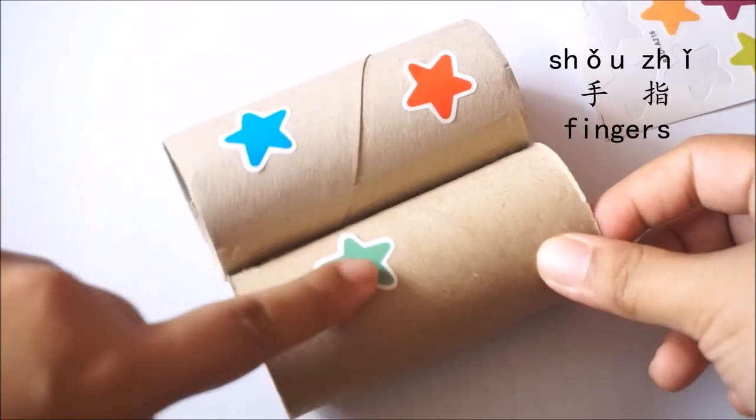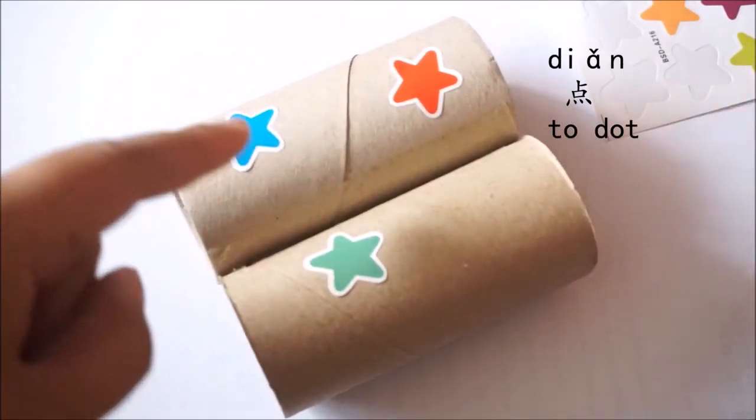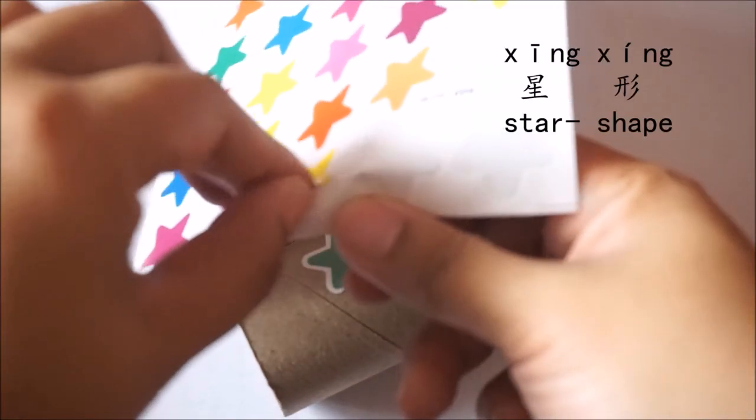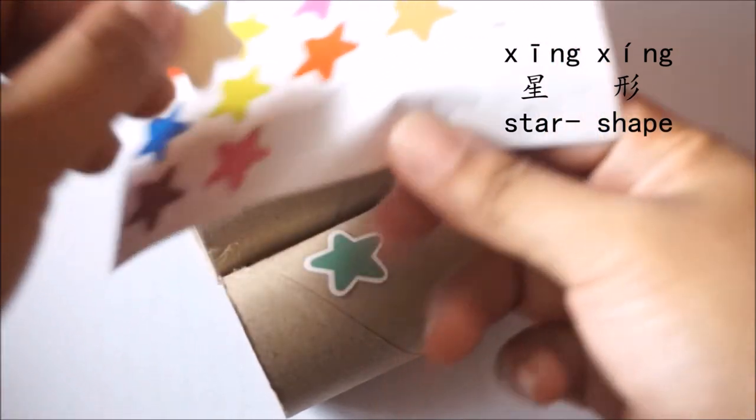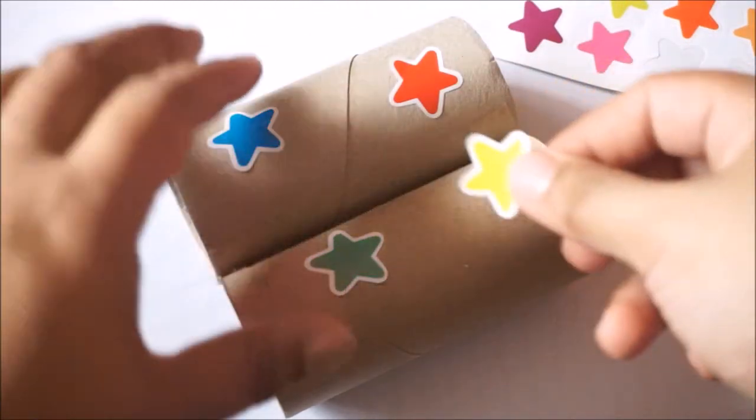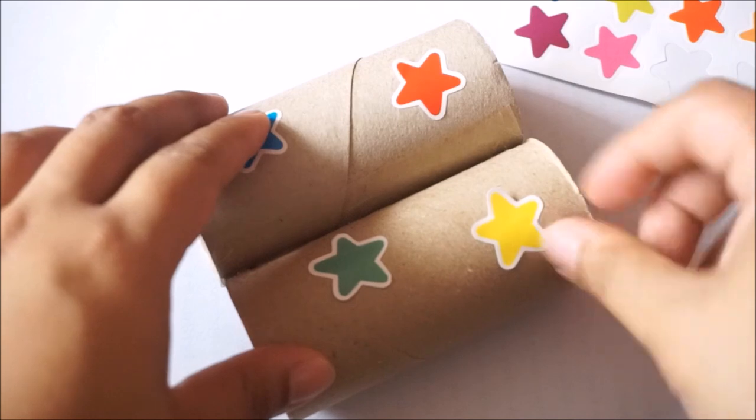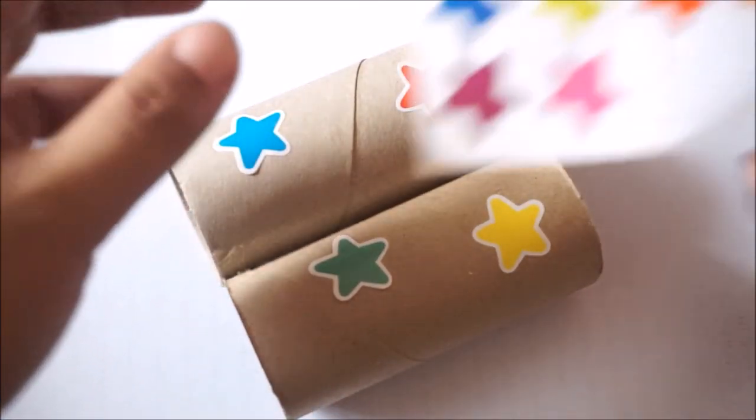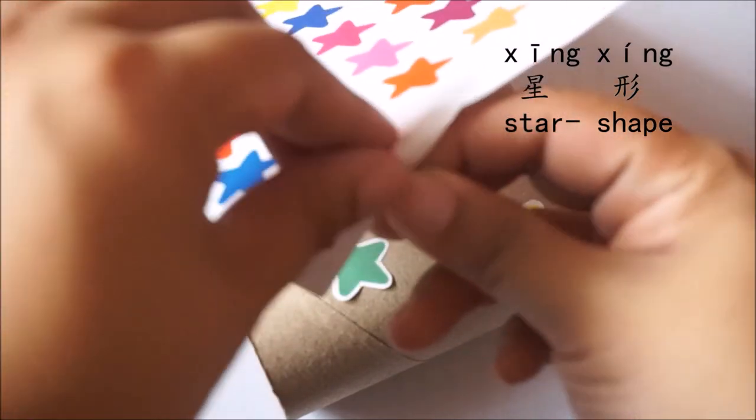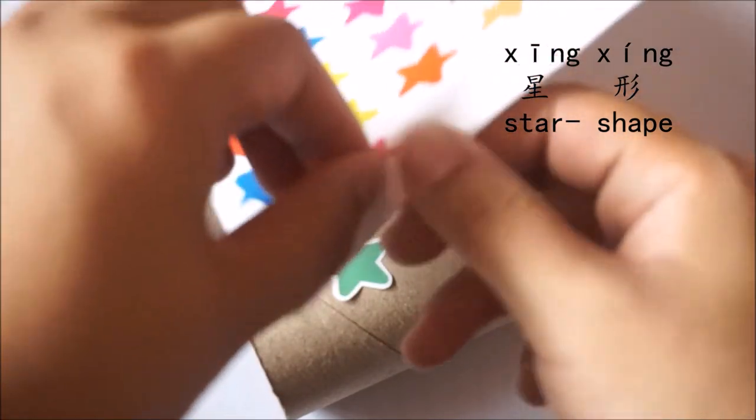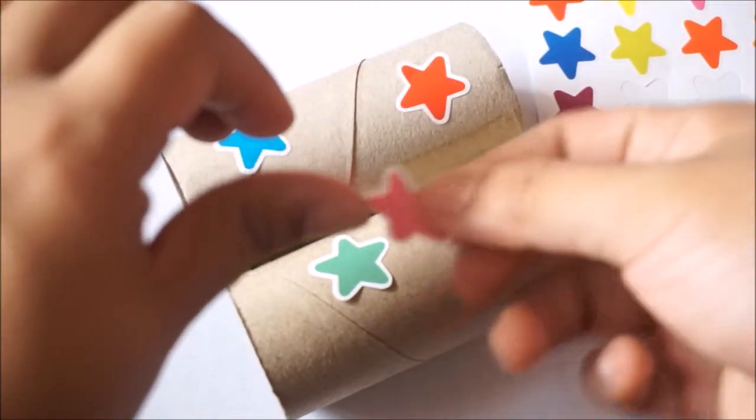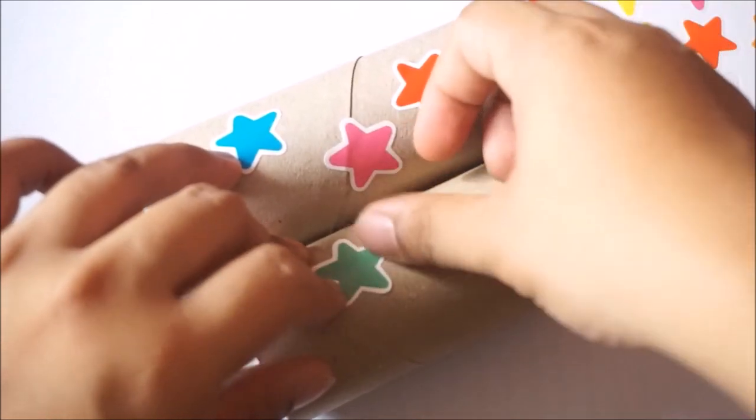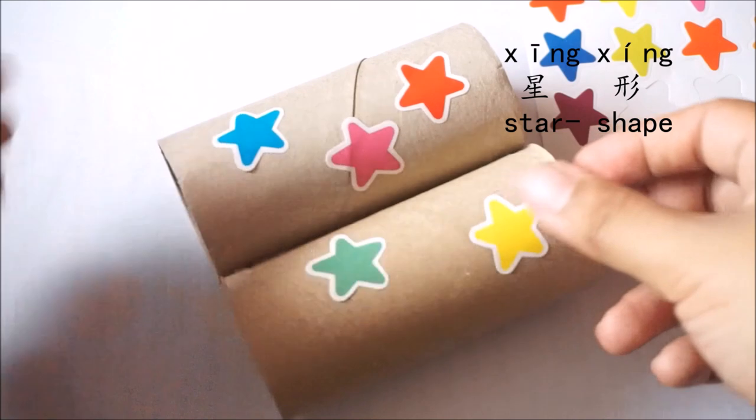Let's stick it on this side. And let's get some more. What shape is this again? This is a star. And let's stick it on this side. And you can put as many stars as you like.